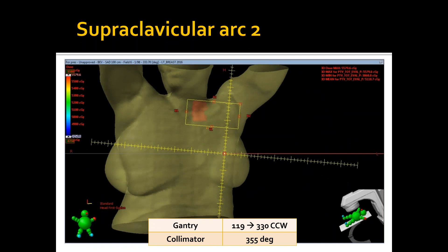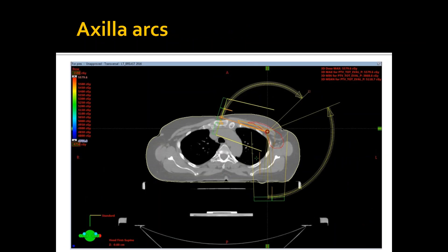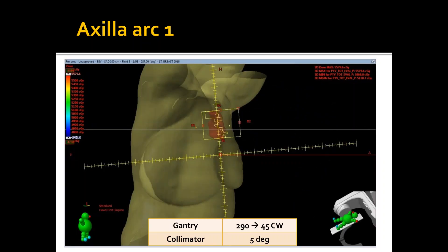These are my axilla arcs. As you can see, they're all partial arcs. I used two partial arcs here as well from 290 to 45 and from 179 to 70 counterclockwise.